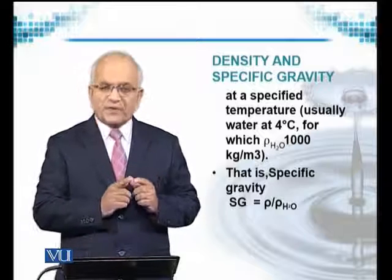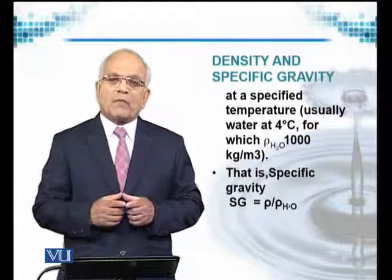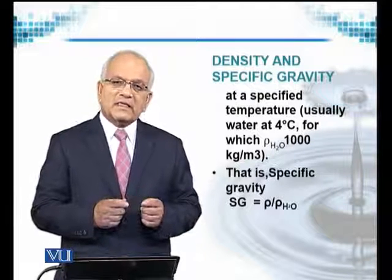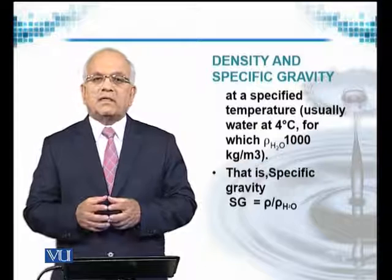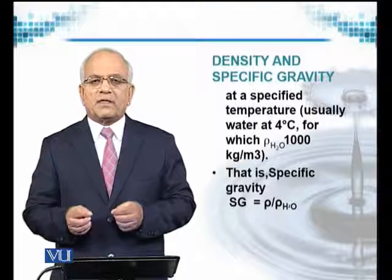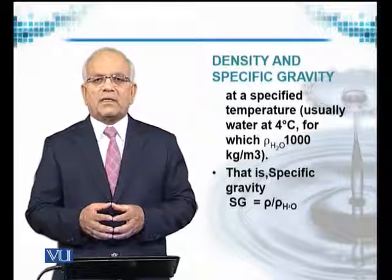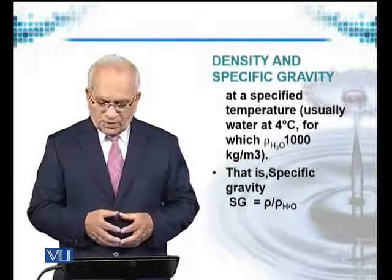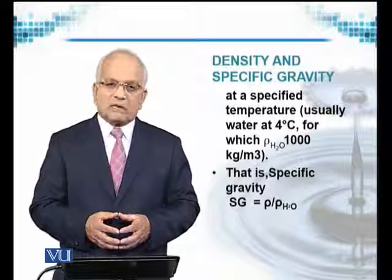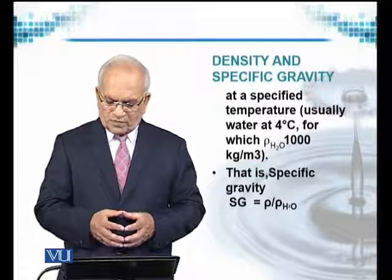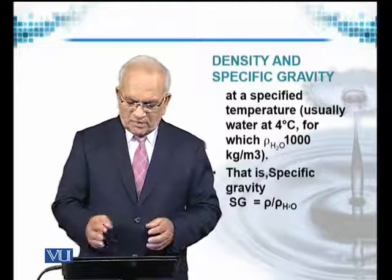Specific gravity is calculated by dividing the density of a substance by the density of a standard fluid. Water is considered the standard liquid, so specific gravity is calculated as the density of the substance divided by the density of water at the same given temperature.